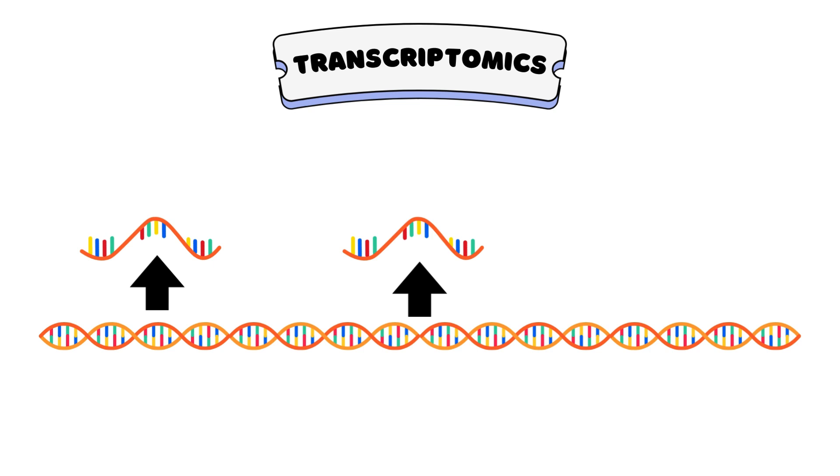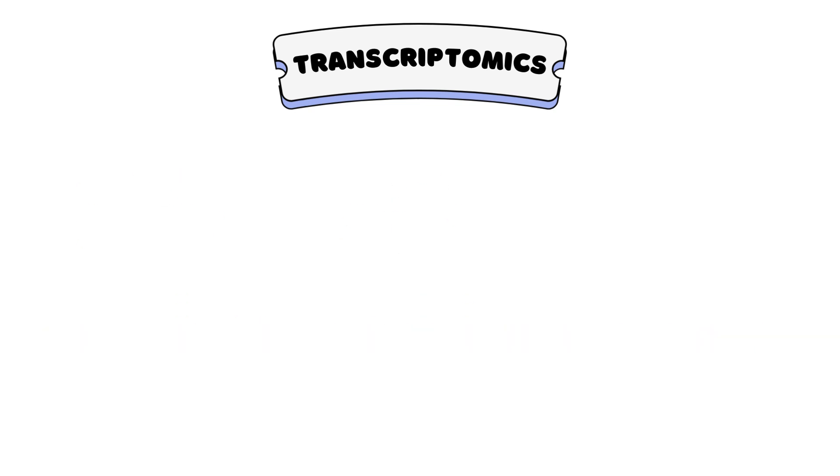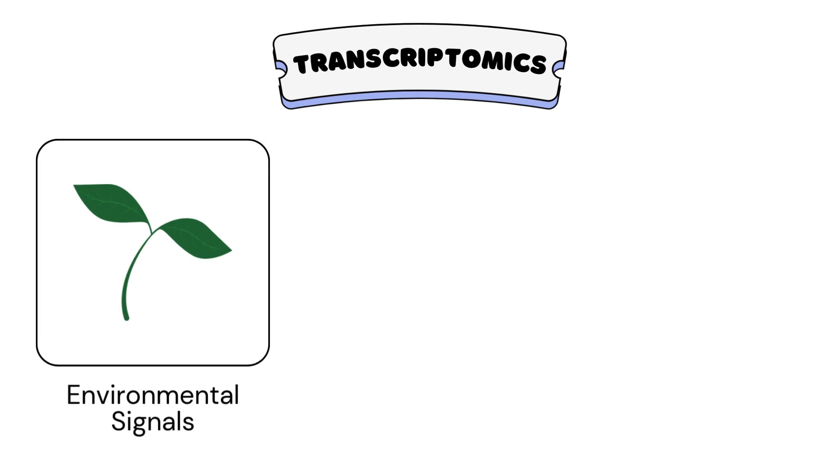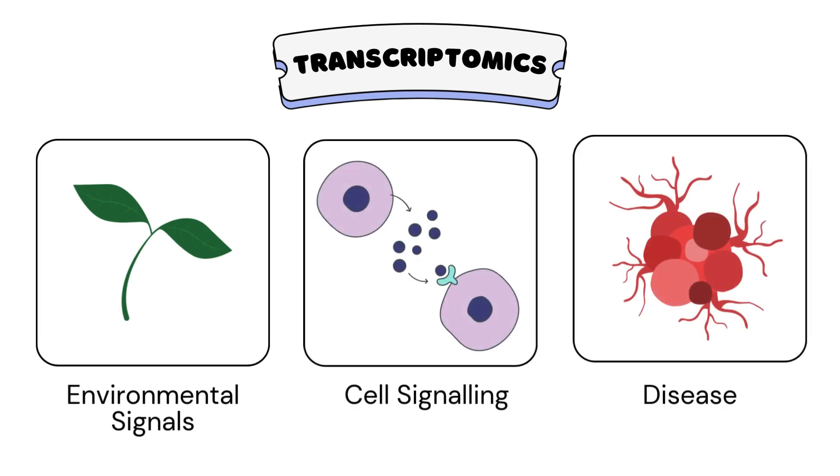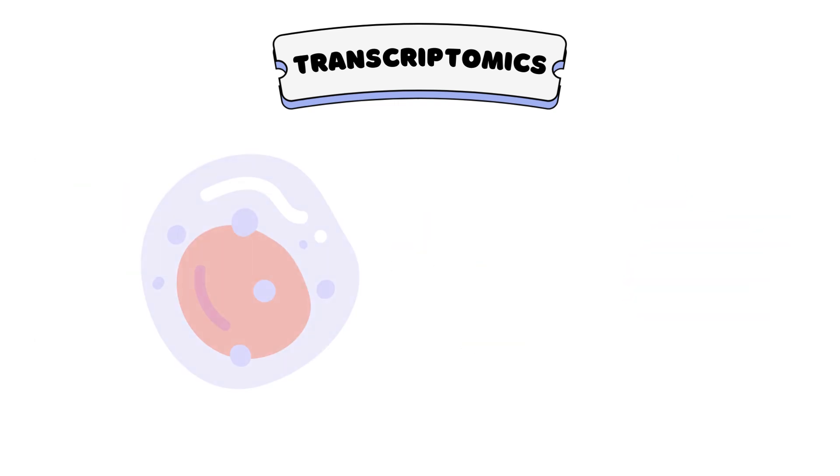The transcriptome can change rapidly in response to environmental signals, cell signaling, or diseases. For instance, when an infection occurs, immune cells change their transcriptomes to produce proteins needed for the immune response.